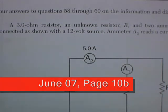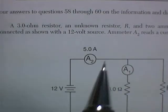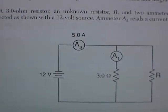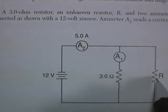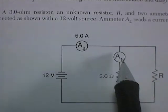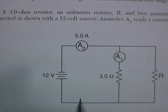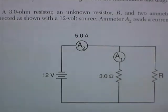We're still in the June OTS 7 exam, the bottom part of page 10, starting with questions 58, 59, and 60, which all pertain to this diagram. We have a 3-ohm resistor, an unknown resistor in parallel, two ammeters 1 and 2, a 12-volt source, and ammeter 2 reading 5 amps.